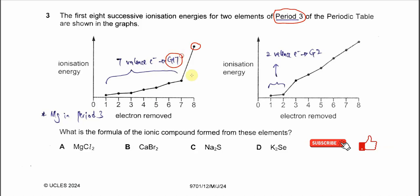For the second element, from the second IE to the third IE we can see a big jump. Therefore we know there are two valence electrons in this element, because the third electron that is removed is from the inner shell and needs more energy. We are quite sure now this element is in Group 2.